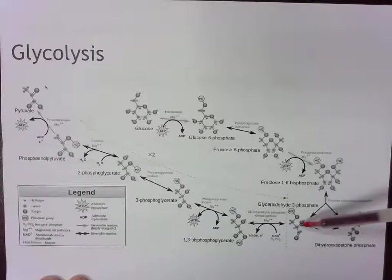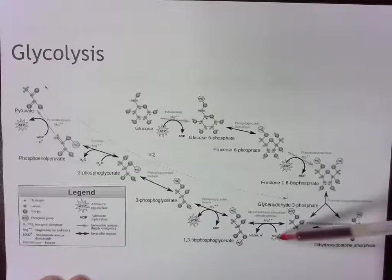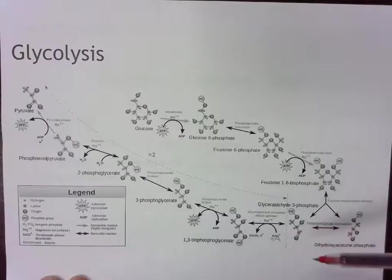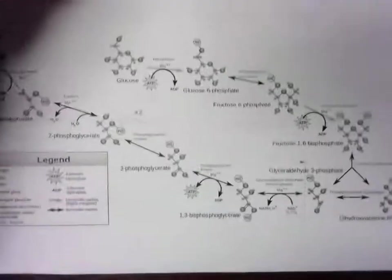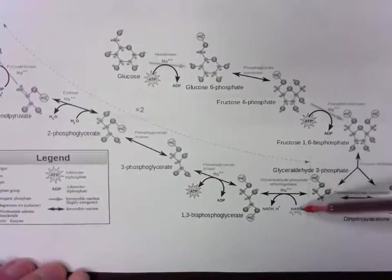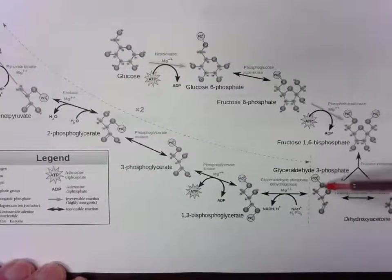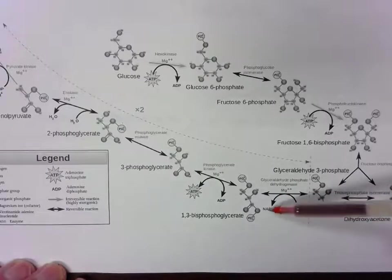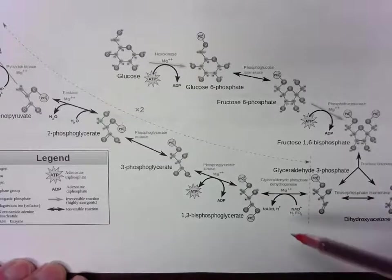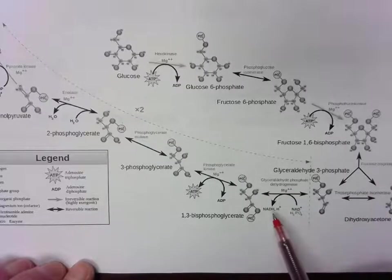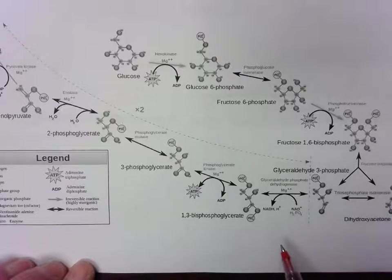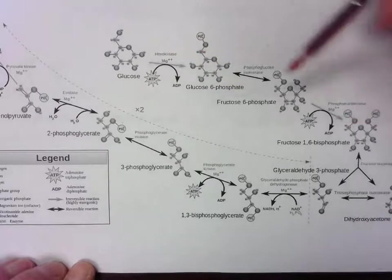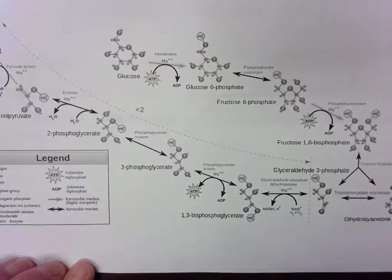In the next step, glyceraldehyde 3-phosphate is a reactant along with NAD+. NAD+ in this instance gets reduced. Glyceraldehyde 3-phosphate gets oxidized. So we end up with products, NADH and 1,3-bisphosphoglycerate. And remember, since this happens twice, we're going to say that in step six, we have two NADHs produced.